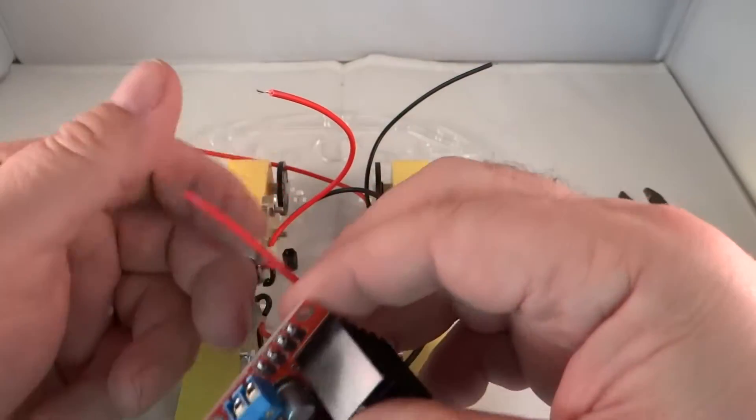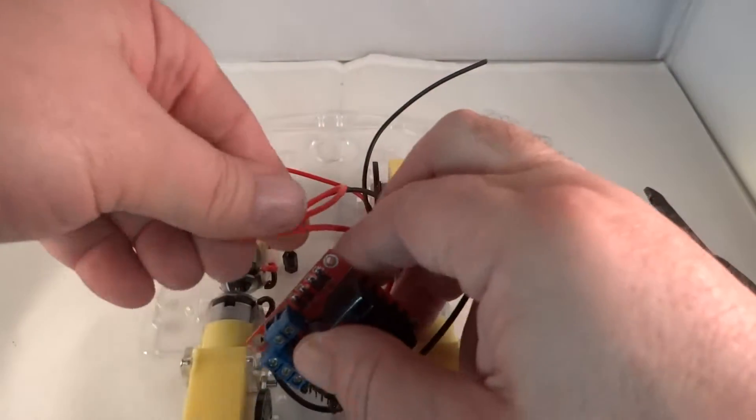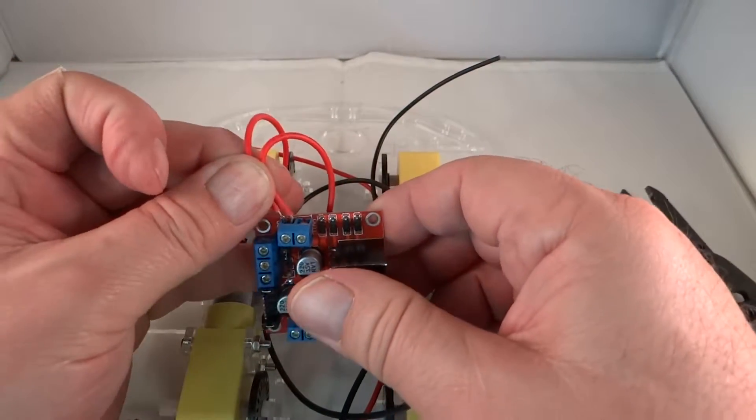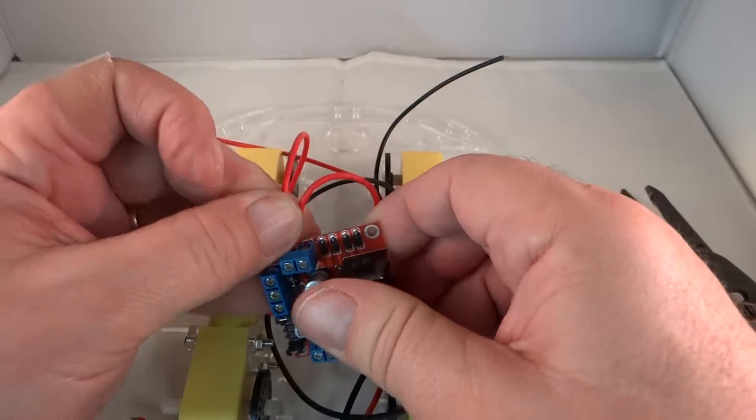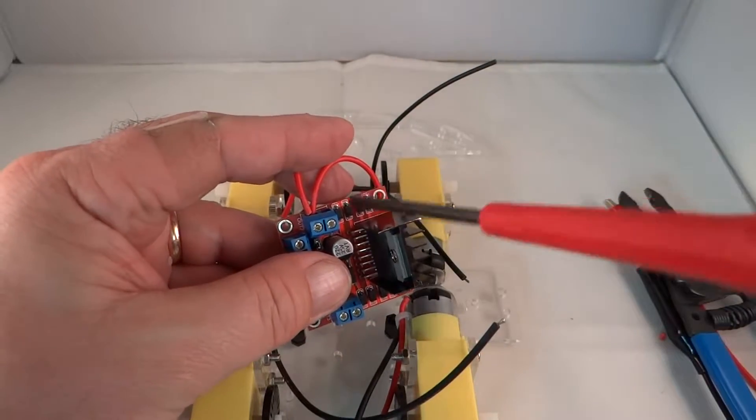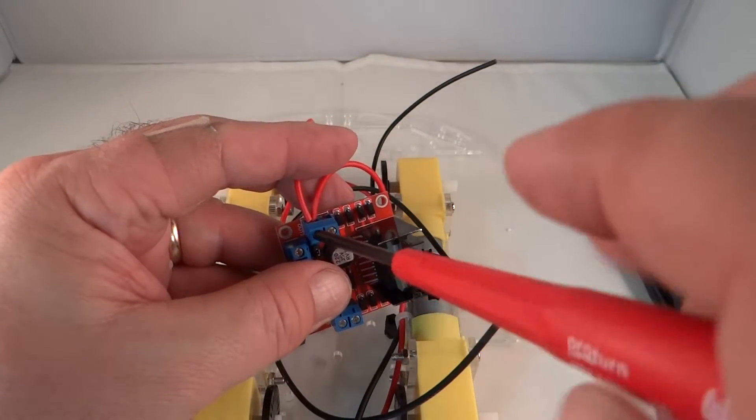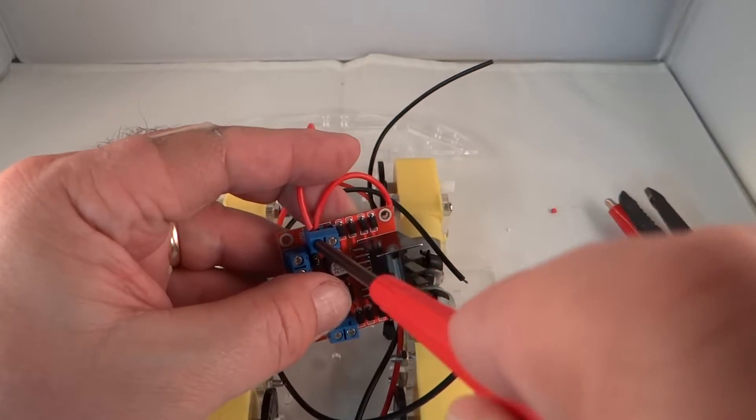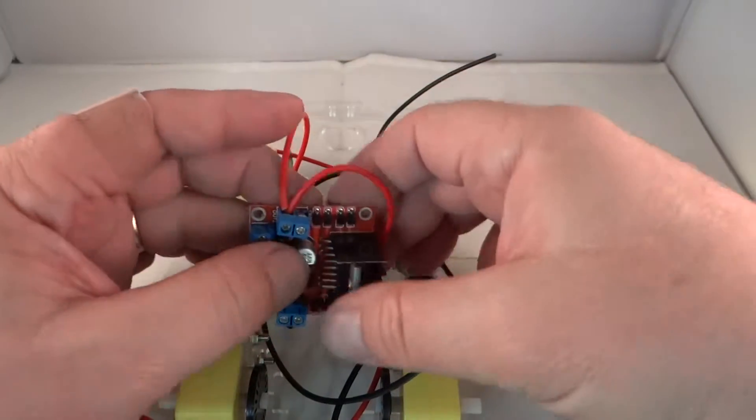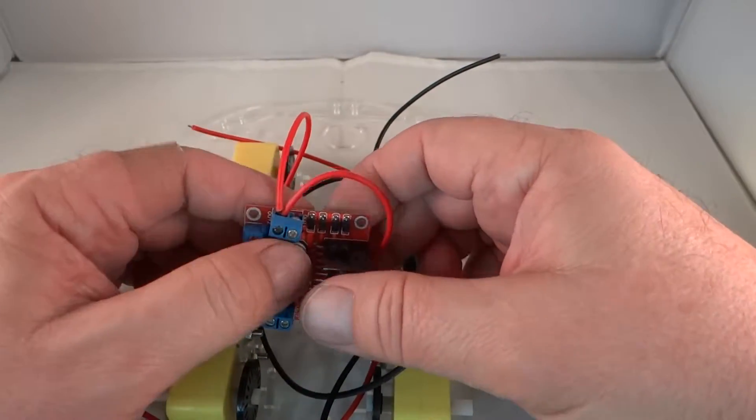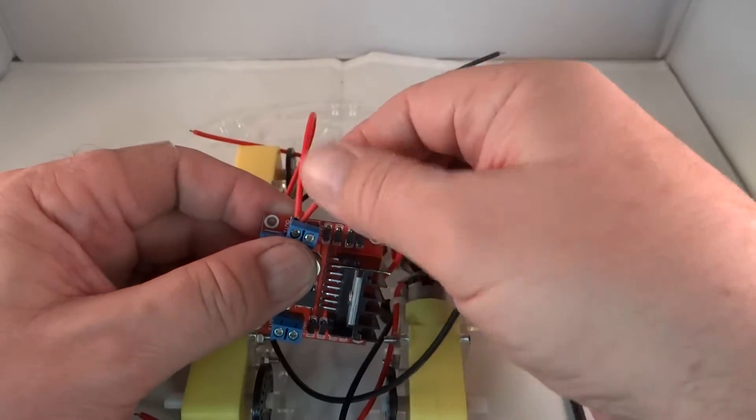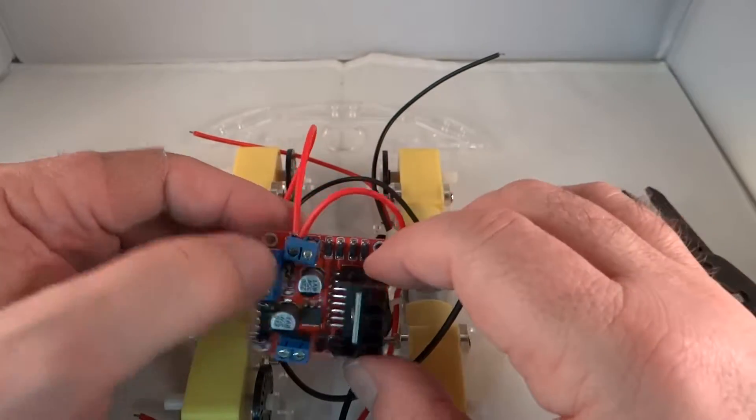So now that they're stripped, I am going to push both of them into this one connector. Push them all the way in, as far as you can go. And then you tighten them down. You don't want to use a million pound muscle there, but you do want to make sure you get it nice and tight. And then you do a pull test. Make sure that the wires won't come out.